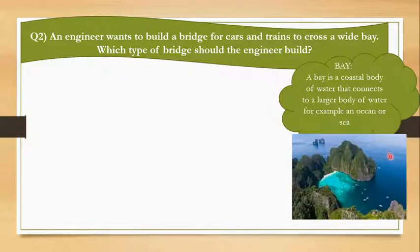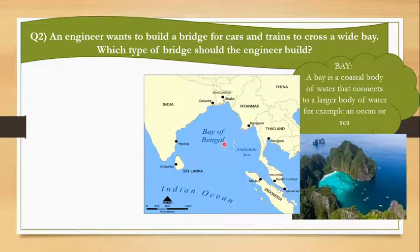So we have to build a bridge across a bay, which means like this way horizontally. But a bay, you might be wondering, this is a very short distance. It says a wide bay. Let's see how wide a bay can be. Here is the Bay of Bengal, touching India, Sri Lanka, Indonesia, Thailand, Myanmar, and Bangladesh.